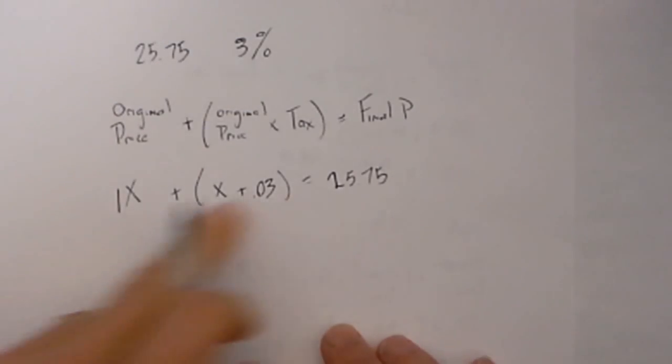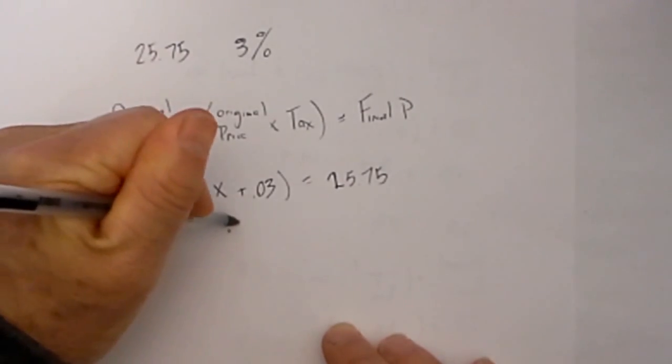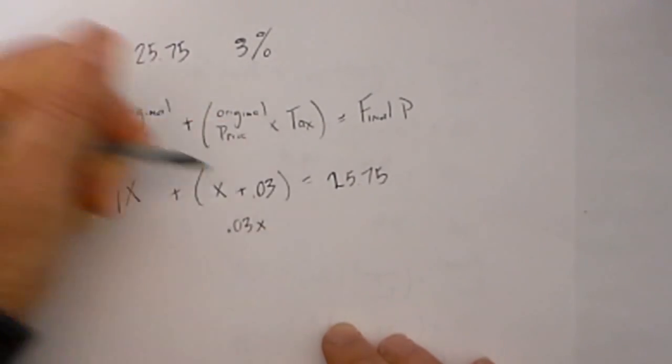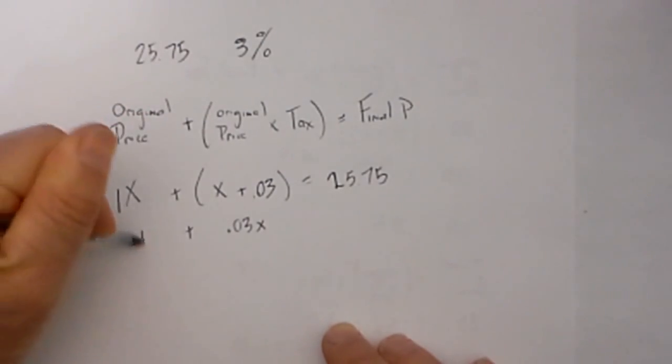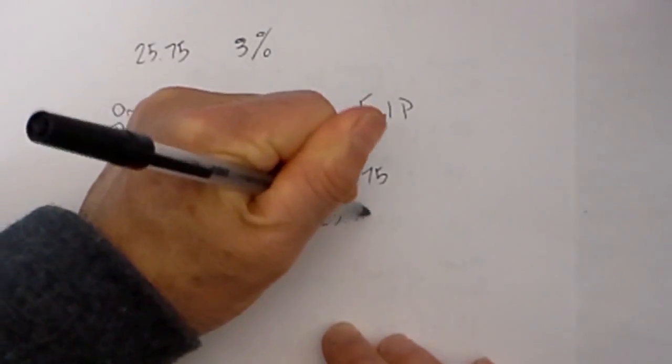I will put a 1 in front of this x just so you will know what I am doing. I will multiply x times 0.03, so that is going to give me 0.03x plus 1x is equal to $25.75.